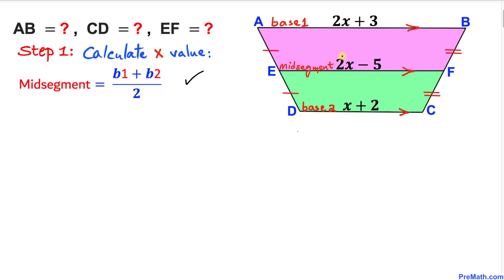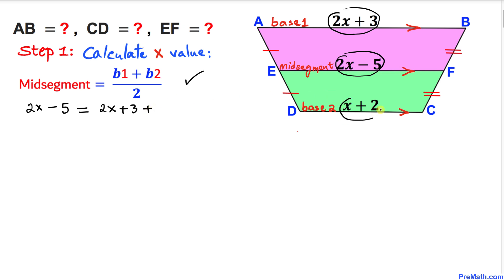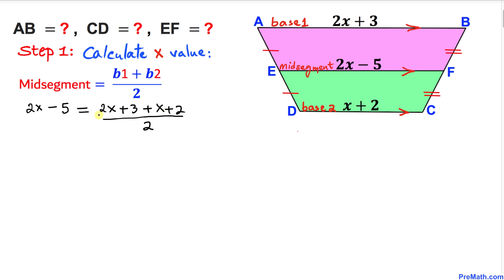Let's fill in the blanks. Our mid segment is 2x − 5, Base 1 is 2x + 3, and Base 2 is x + 2. So we have: 2x − 5 = (2x + 3 + x + 2) / 2. Combining like terms on the right gives us (3x + 5) / 2.